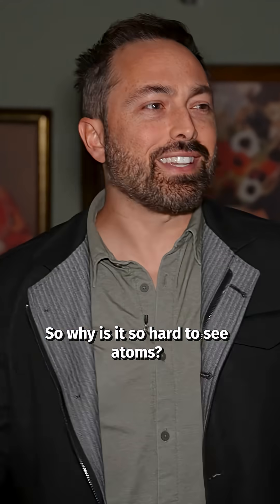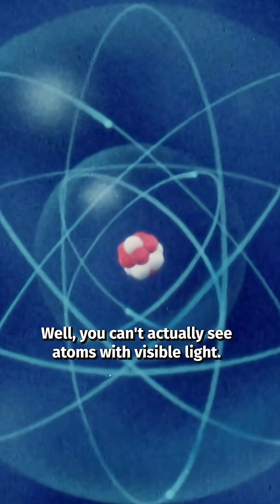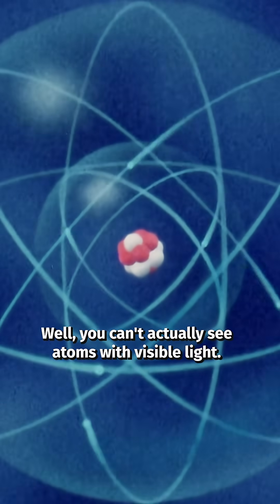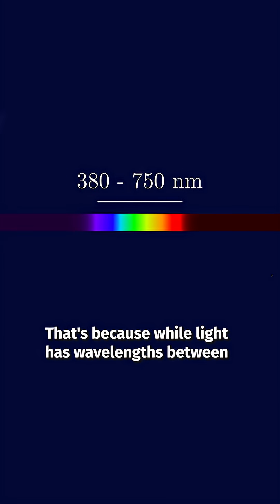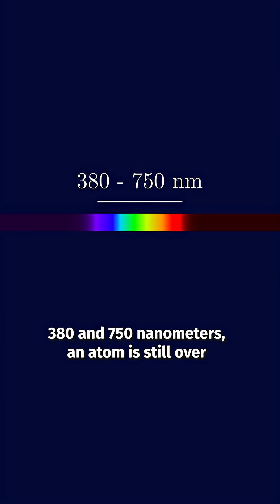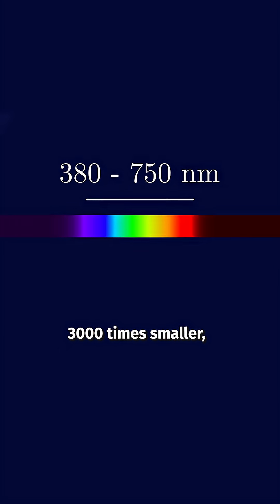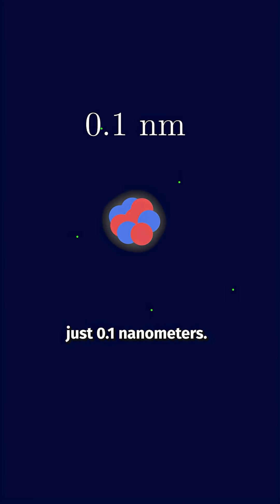So why is it so hard to see atoms? Well, you can't actually see atoms with visible light. That's because while light has wavelengths between 380 and 750 nanometers, an atom is still over 3,000 times smaller, just 0.1 nanometers.